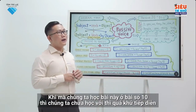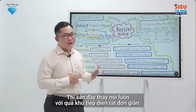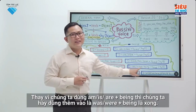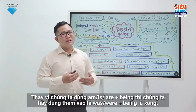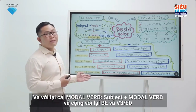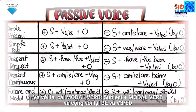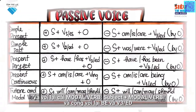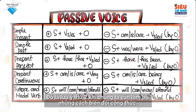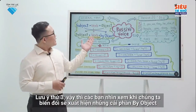We haven't learned the past continuous in Unit 10, but it is extremely simple — use was/were + being instead of am/is/are + being. For modal verbs, the passive formula is: subject + modal verb + be + past participle (V3). That is the second note when doing exercises: the ways to transform the formula.